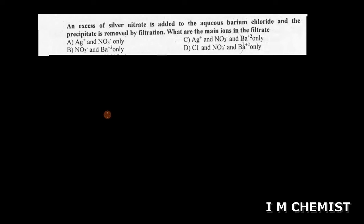Hello students, welcome to I Am Chemist. Today I have brought another MCQ for you from chemical equilibrium which says: An excess of silver nitrate is added to aqueous barium chloride and the precipitate is removed by filtration. What are the main ions in the filtrate?